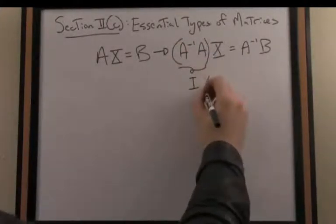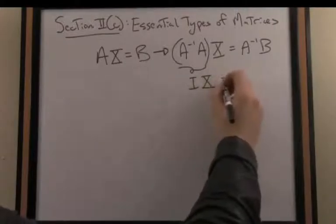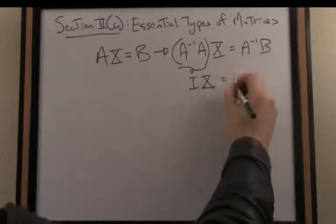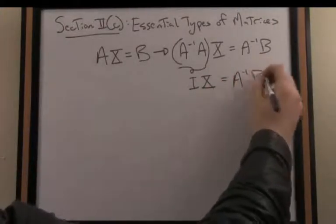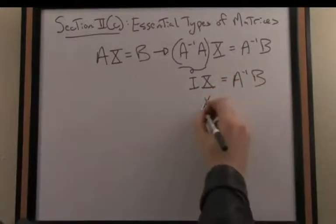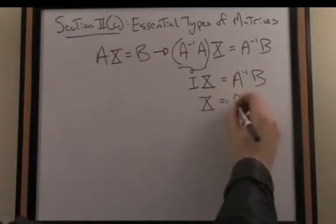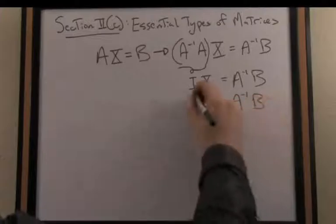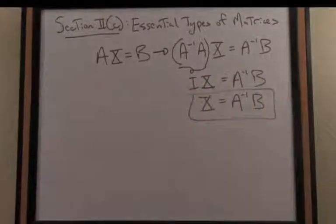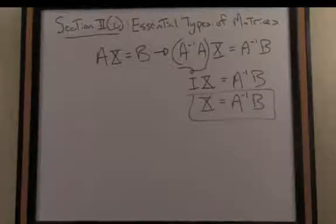When I then multiply the identity matrix times x on the left-hand side, that leaves me by definition with just the matrix x. And now I have solved a matrix equation for an unknown matrix x in this case. So there's one nice, certainly very common application of applying inverse matrices to solve a matrix equation.